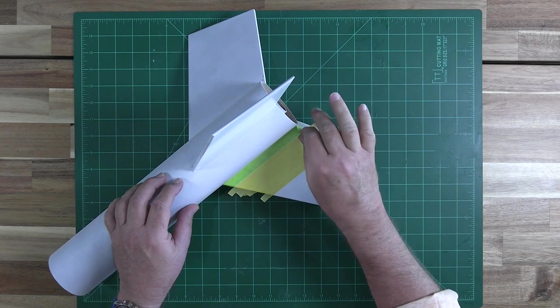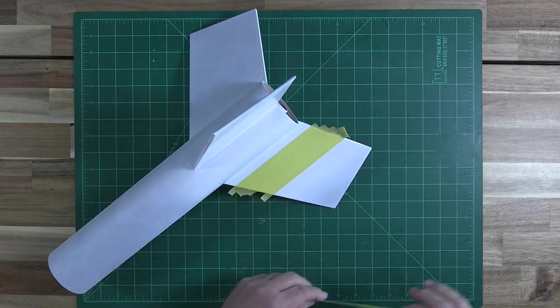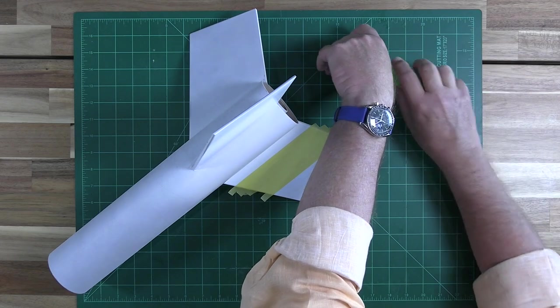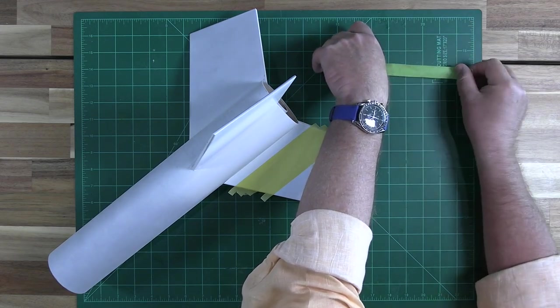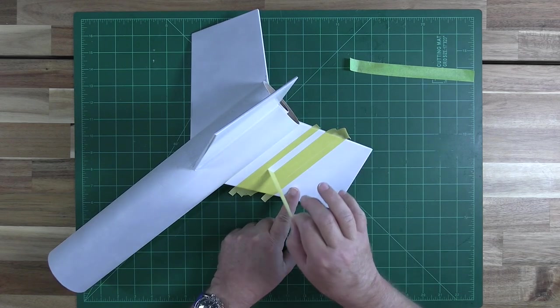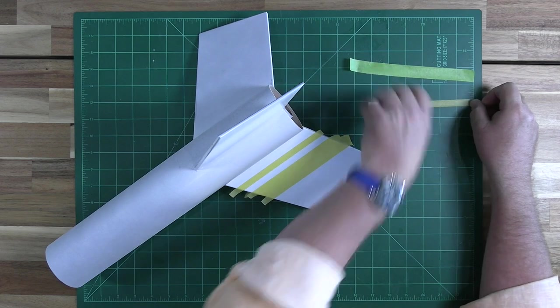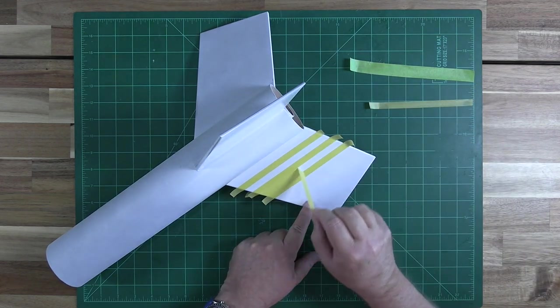We can now pull up our alignment strip. We can use this again. And the two intermediate strips. These are the locations where black paint will be applied.